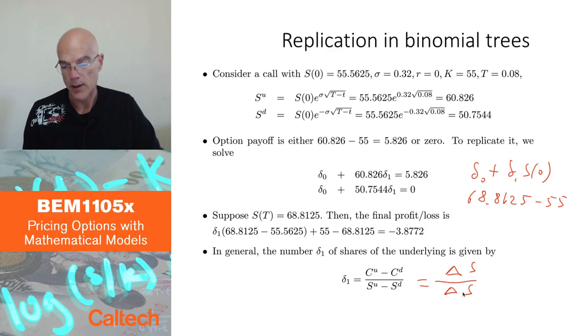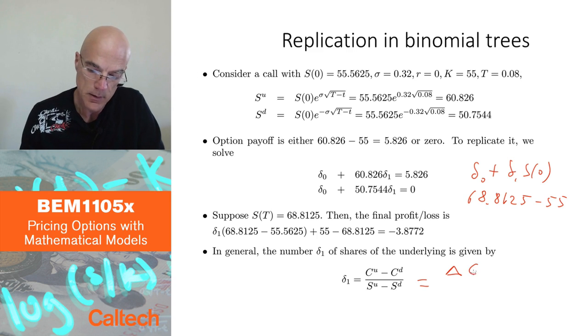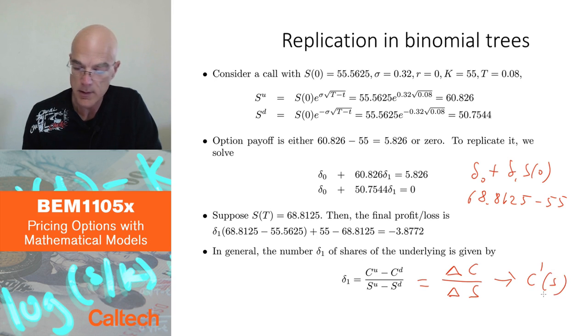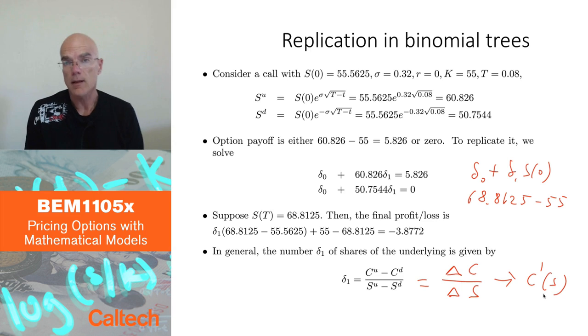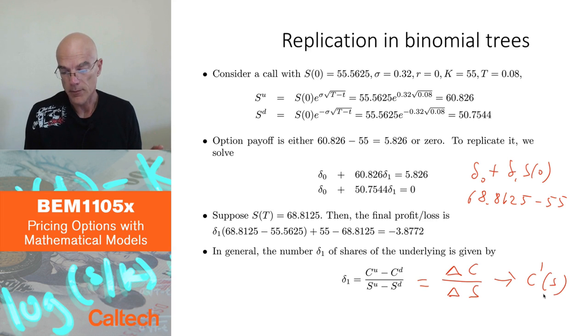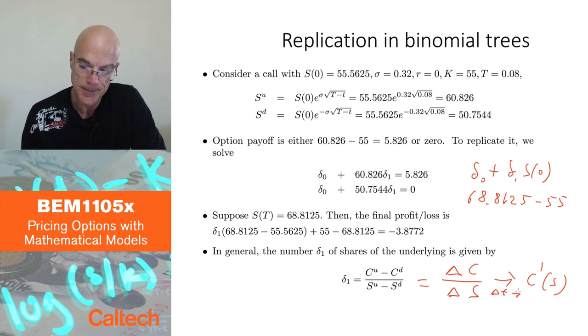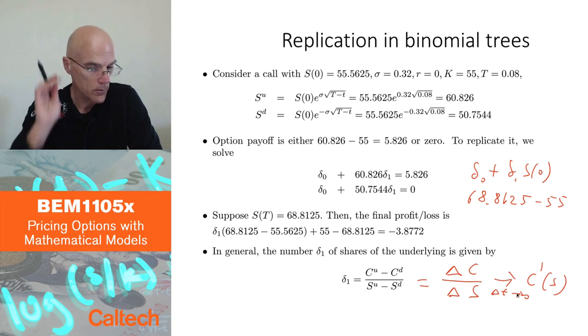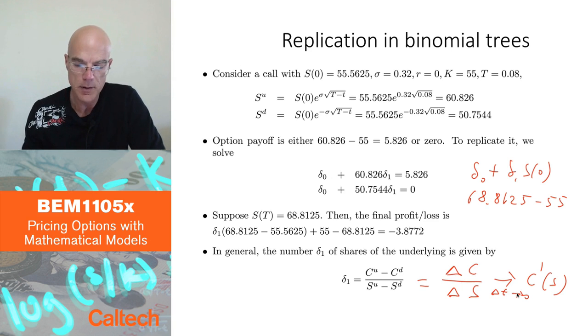We could think of this as ΔC over ΔS. And this is why in Black-Scholes, ΔC over ΔS, this converges to the derivative C' with respect to S. There is also T there, but let's just look at it as a function of S, to the delta of the option, which is the derivative of the option price with respect to the underlying. That would happen when ΔT goes to zero. So that's just to remind ourselves how replication works in the simplest model.